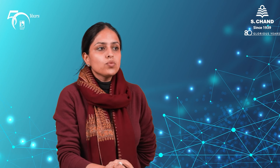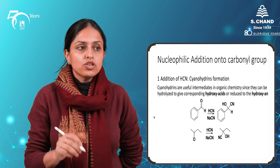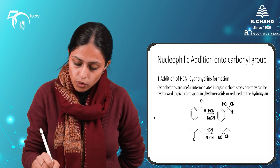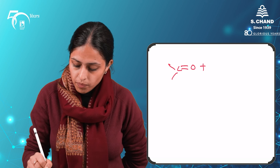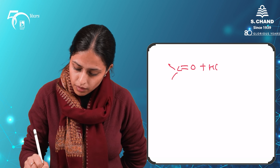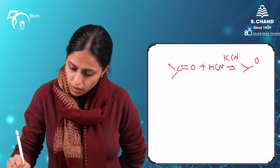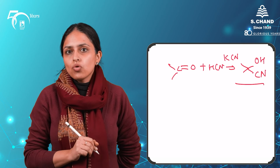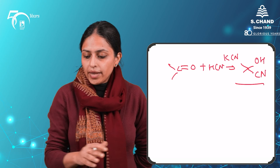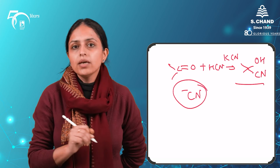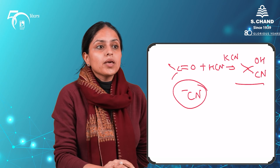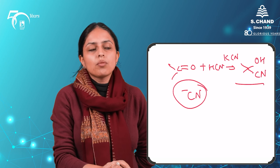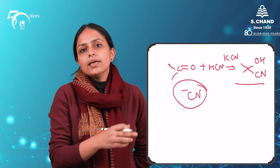The first nucleophilic addition reaction of aldehydes and ketones is the addition of HCN. Addition of an HCN molecule onto carbonyl compounds gives rise to versatile compounds known as cyanohydrins. Cyanohydrins form when any carbonyl compound is reacted with HCN in the presence of KCN, giving alpha-hydroxynitriles. These alpha-hydroxynitriles, also known as cyanohydrins, are formed when CN⁻ acts as the nucleophile on the electrophilic carbonyl carbon.